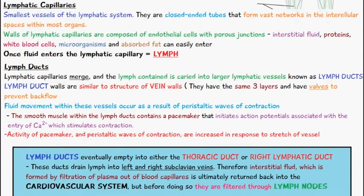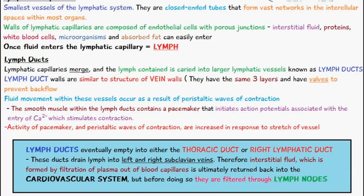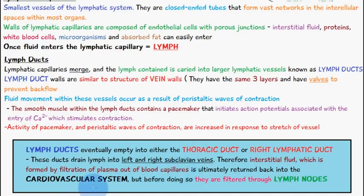Lymph ducts eventually empty into either the thoracic duct or the right lymphatic duct. These ducts drain lymph into the left and right subclavian veins, and therefore interstitial fluid, which is formed by filtration of plasma out of the blood capillaries, is ultimately returned back into the cardiovascular system. Before doing so, the lymph is filtered through lymph nodes.